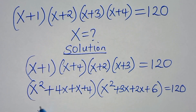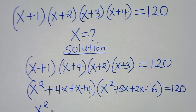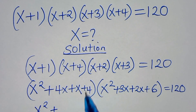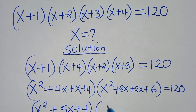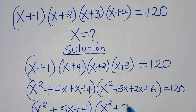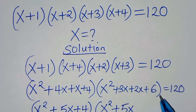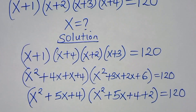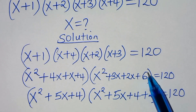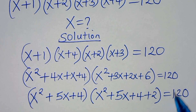Simplifying, the first bracket gives x²+5x+4. The second bracket gives x²+5x+6. We can express 6 as 4+2, so we have (x²+5x+4)(x²+5x+4+2) = 120.